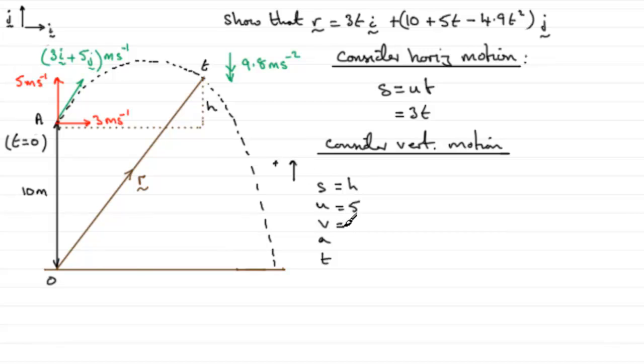We don't know what v is at this time t here, so we'll just leave that blank. As for a, we know it acts vertically downwards in the opposite sense to what we've got here, so that's going to be minus 9.8. And the time t, well that is t when the particle is here.